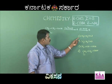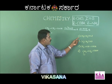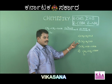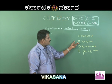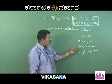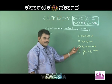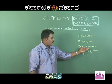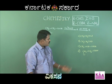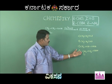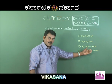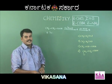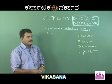The options are: A) CH₃CH₂COCl, B) CH₃CH₂CHO, C) CH₂=CH-COOH, or D) CH₂ClCH₂COOH.